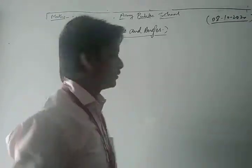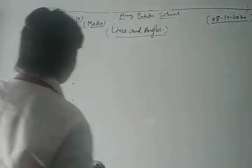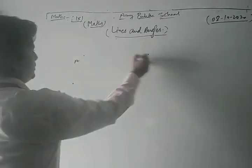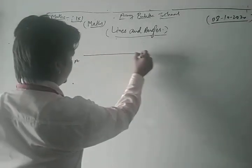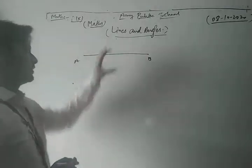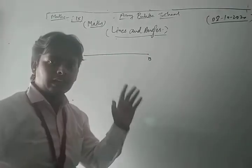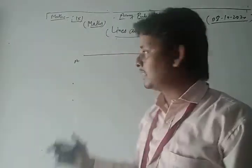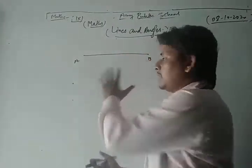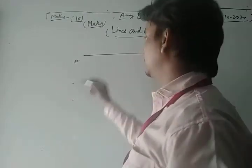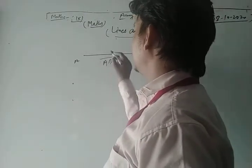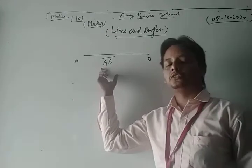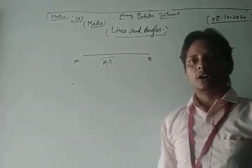Dear students, if there are two points A and B and we join them, this is called a line segment. A line segment has two end points. Here AB is your line segment, and we represent any line segment as AB.